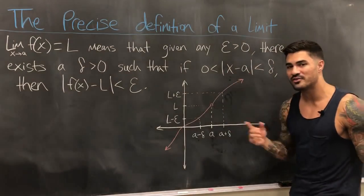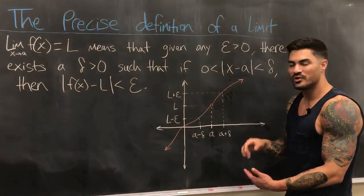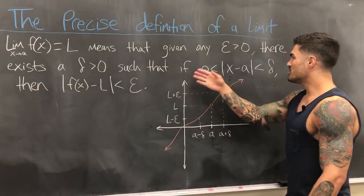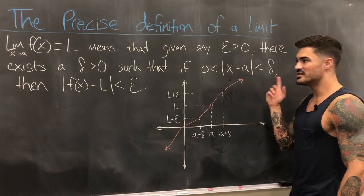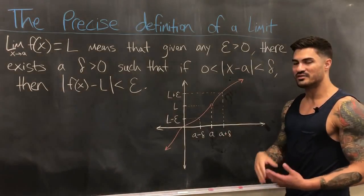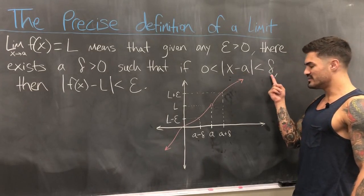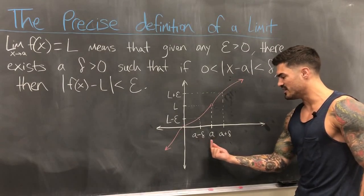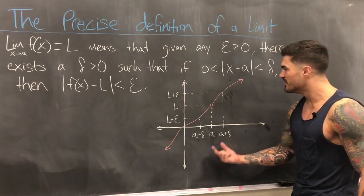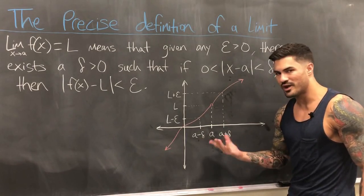Let's reread the definition: given any epsilon greater than zero, there exists a delta greater than zero such that if the distance from X to a is greater than zero — meaning we don't care about when X equals a, which makes sense because our limit can still exist even if f is undefined at a — and less than delta, then the distance from f(x) to L is less than epsilon. A delta distance from a in each direction gives us the interval (a − delta, a + delta).